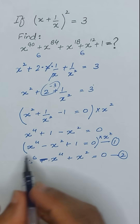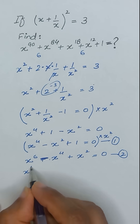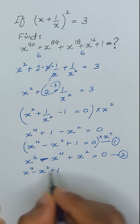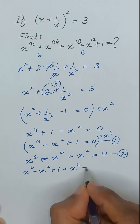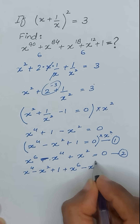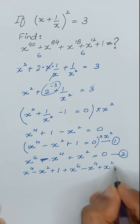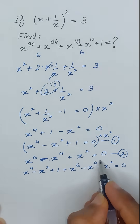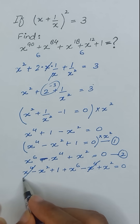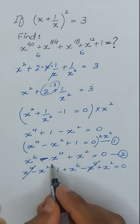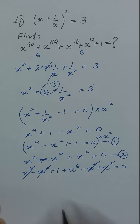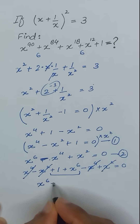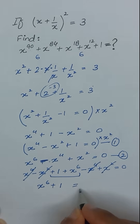Now we add the two equations: x⁴ minus x² plus 1 plus x⁶ minus x⁴ plus x² equals 0. The negative and positive x⁴ terms cancel out, and the negative and positive x² terms cancel out, giving us x⁶ plus 1 equals 0.